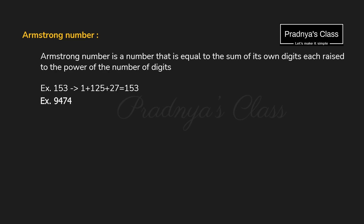After writing the code for the perfect number, it's time to write the code for the Armstrong number. What is an Armstrong number? Let's understand with one example. Take the number 153. The first task is to separate out its digits: 1, 5, and 3. The second step is to calculate their cubes: 1 cubed is 1, 5 cubed is 125, and the cube of 3 is 27.